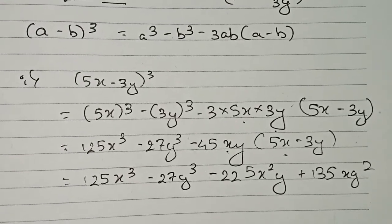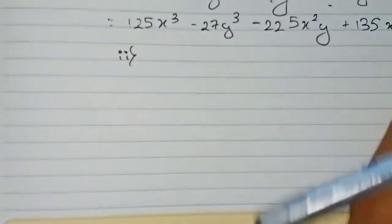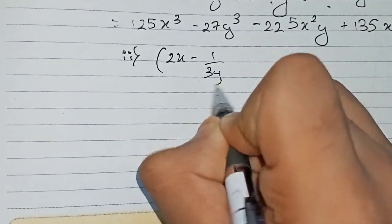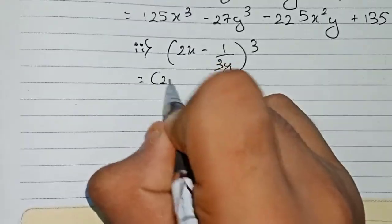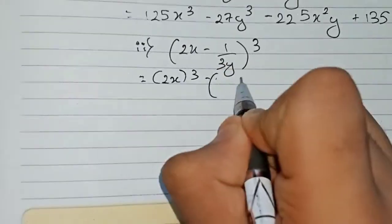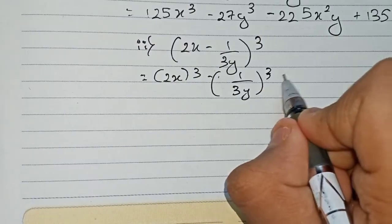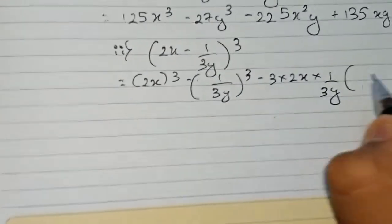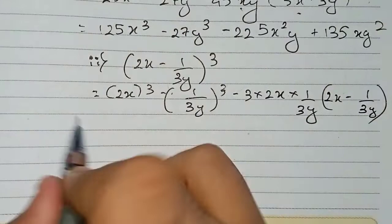Now moving to our next question: 2x minus 1 by 3y whole cube. Using the same formula, we write: first 2x cube, minus 1 by 3y cube, then minus 3 into 2x into 1 by 3y, and finally in bracket 2x minus 1 by 3y.